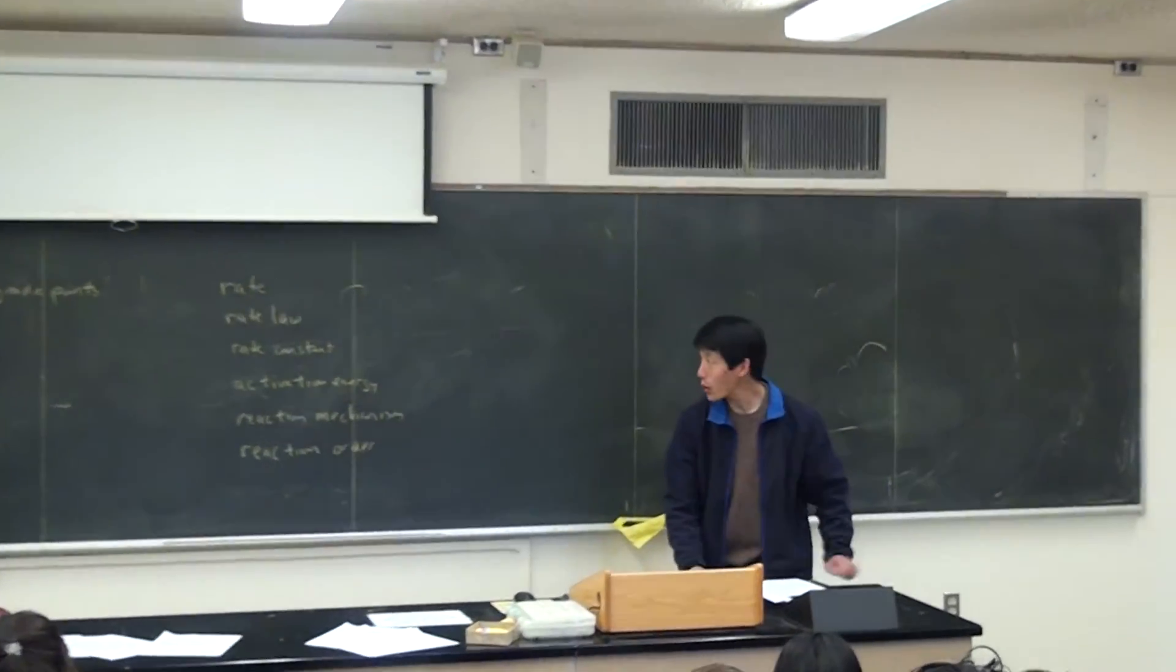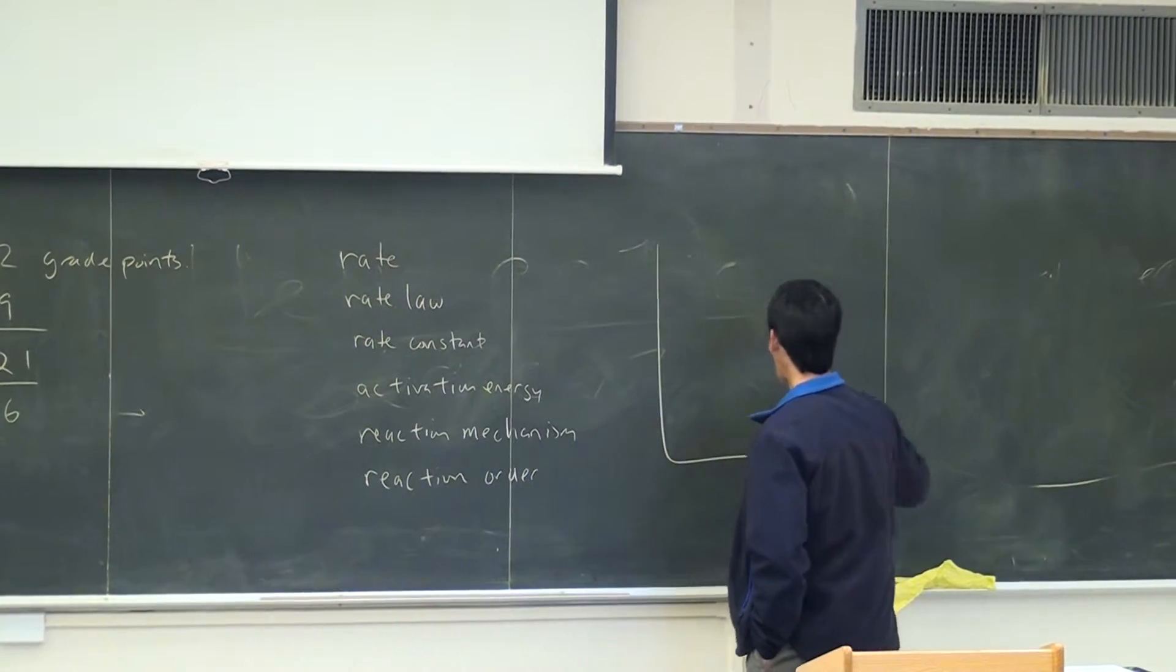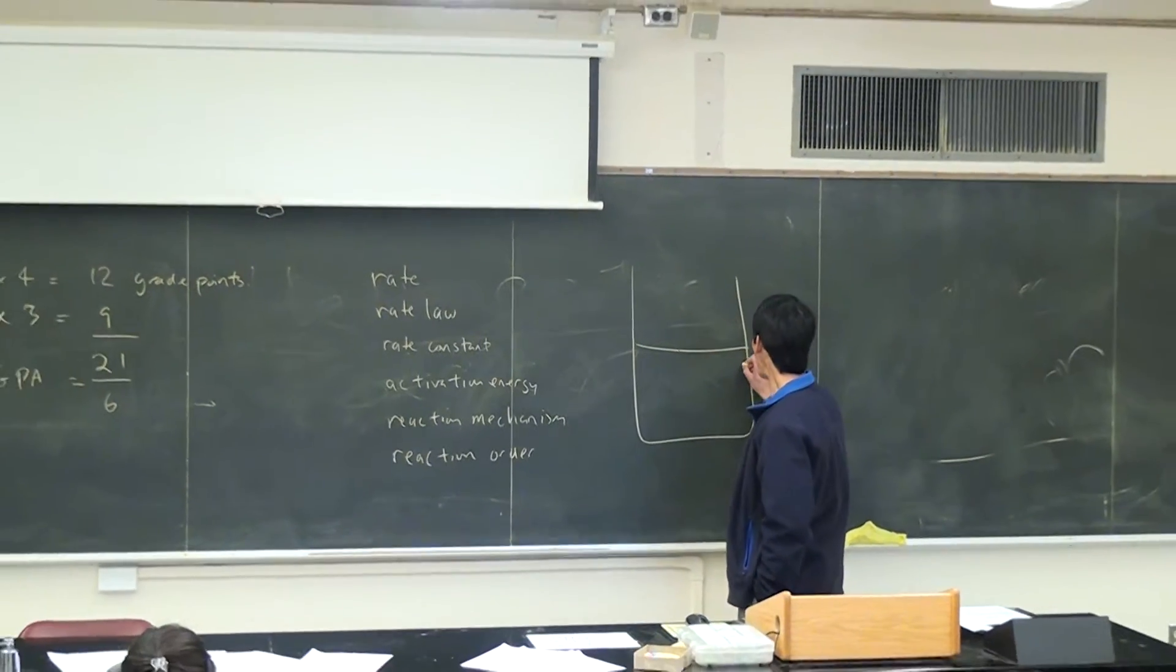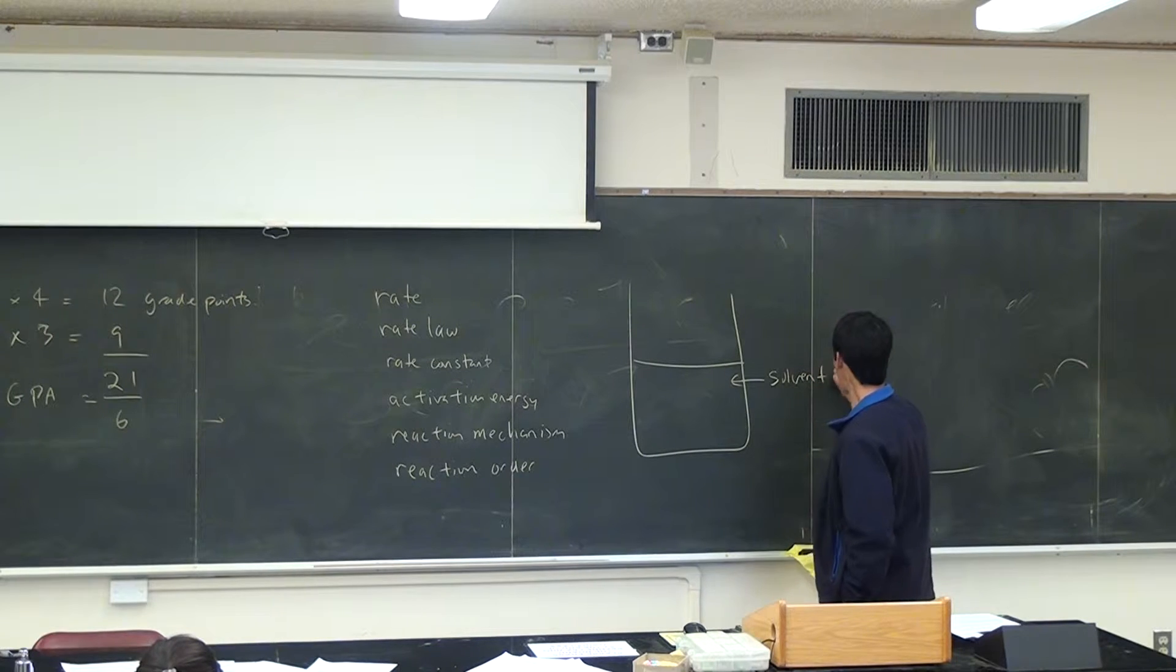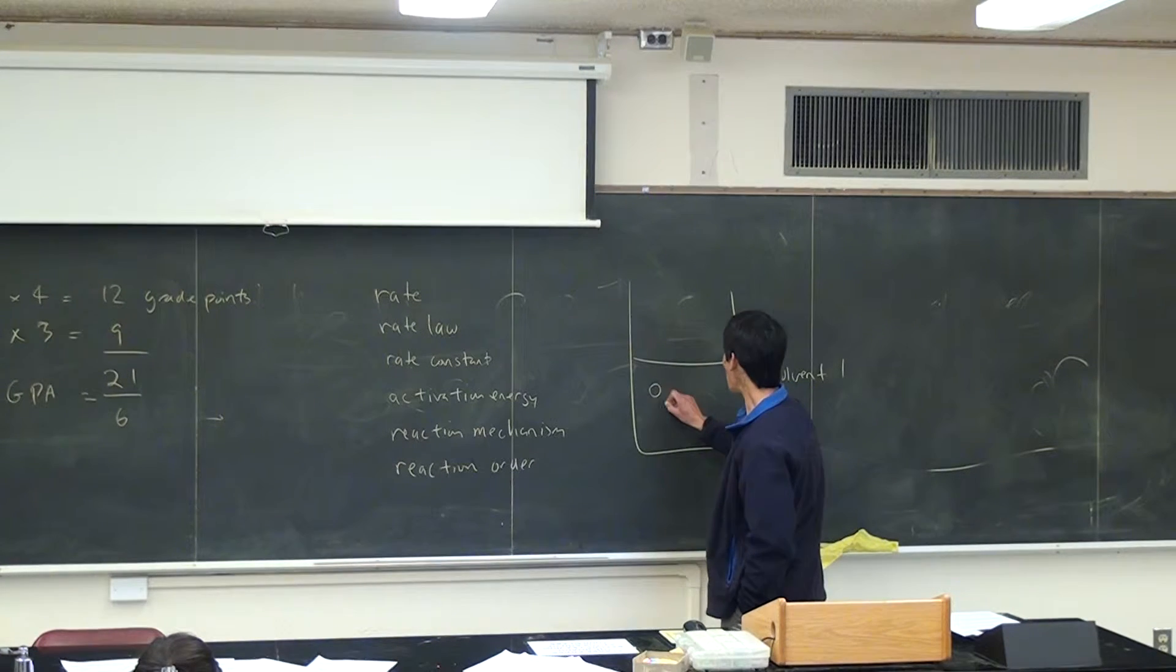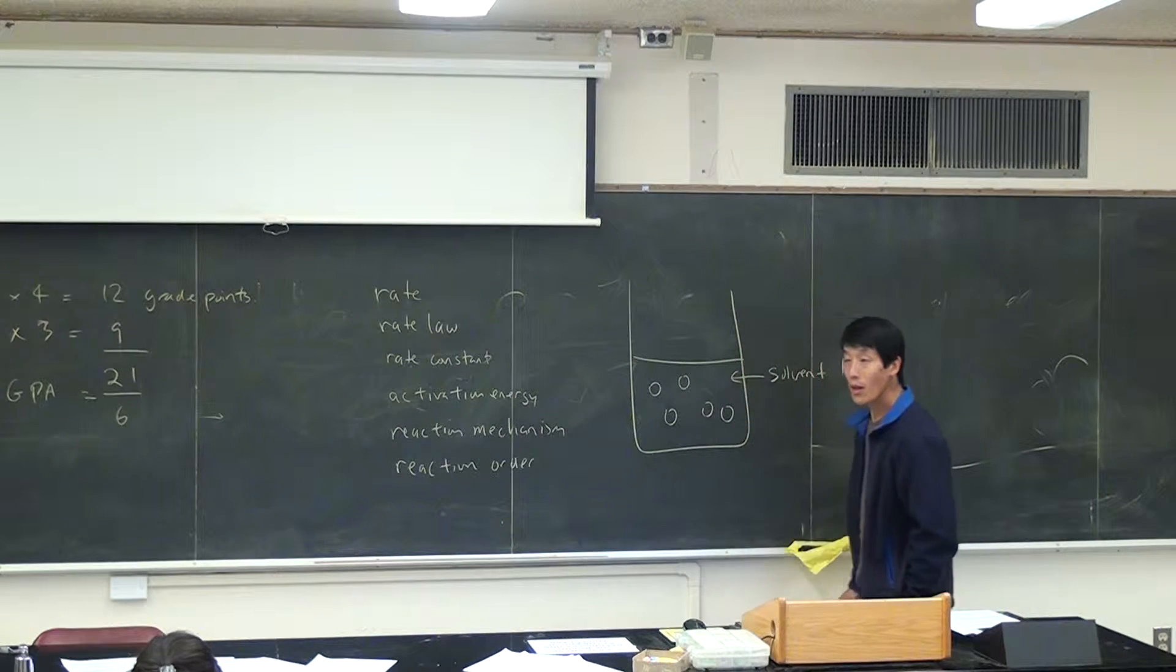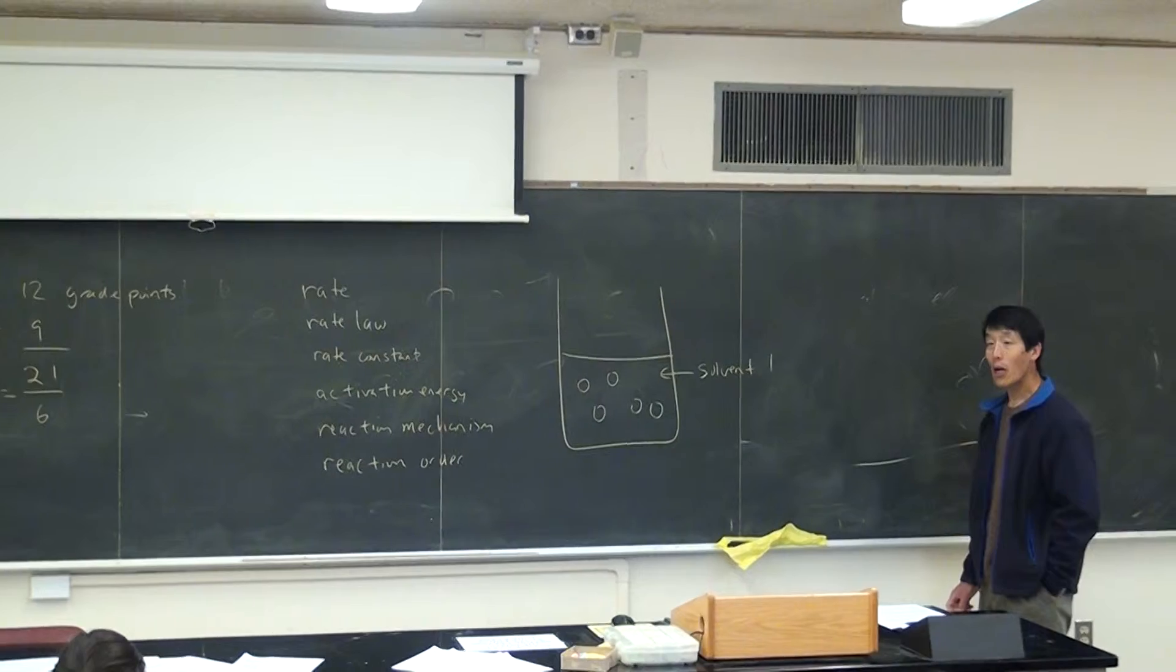Explain how an extraction works. So in an extraction, you have to look at solubility. Maybe you have a solution. This is your solvent, called solvent one. And then there are all these soluble molecules or atoms dissolved in solvent one. If you want to extract the solute from the solvent...